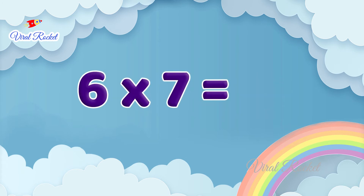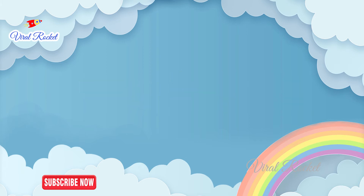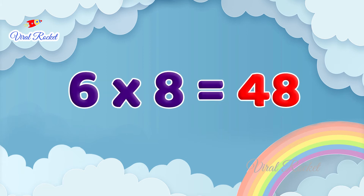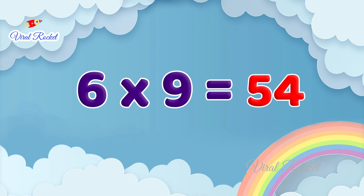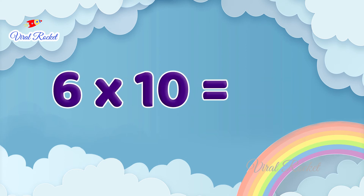Six sevens are forty-two. Six eights are forty-eight. Six nines are fifty-four. Six tens are sixty.